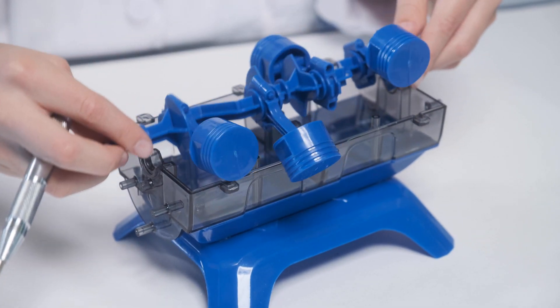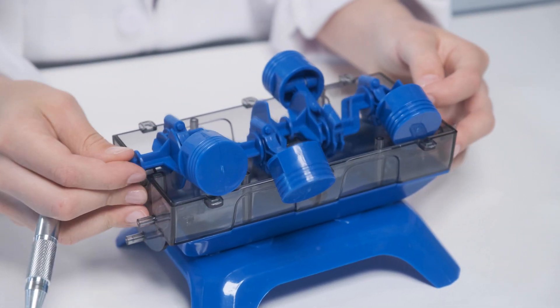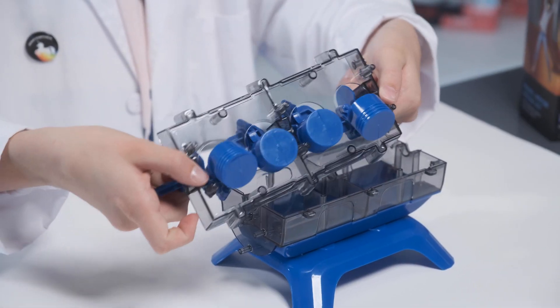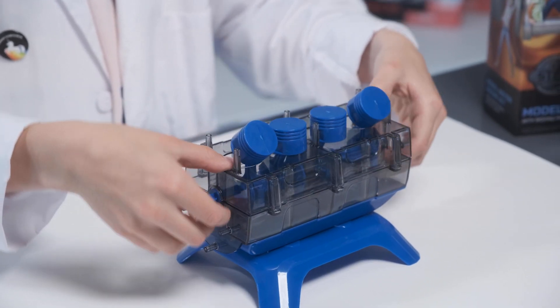Grab the lower crankcase and place the pistons on top. Make sure the pistons move up and down driving the crankshaft in a clockwise direction. Cover it up with the upper crankcase.